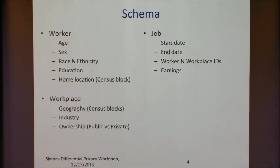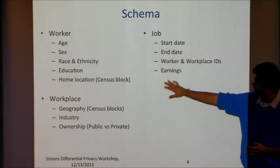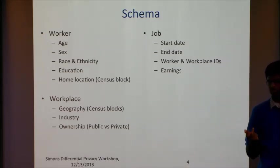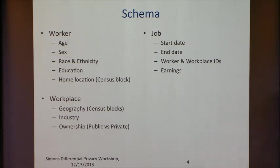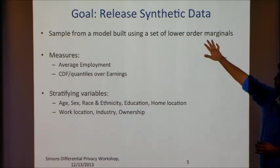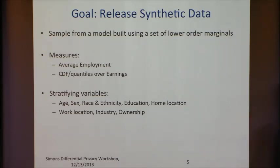One thing to point out is this data is fairly sparse. Even looking at certain attributes like home location or geography of a workplace — it's at the census block level, and there are about 11 million blocks on the map. So the cross-product space is fairly large, and the data and even the lower-order marginals are also fairly sparse, because many contain the cross product of home location and work location.